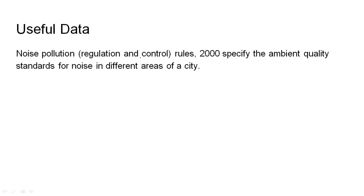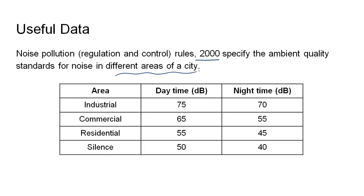The Noise Pollution Rules of 2000 specify the ambient quality standards for noise in different areas of a city. For industrial zones it is 75 dB (day) and 70 dB (night); for commercial it is 65 and 55; for residential it is 55 and 45; and for silence zones such as hospitals it is 50 and 40 respectively.